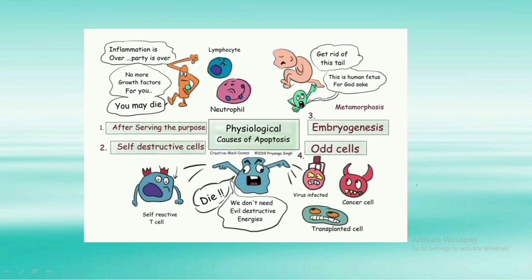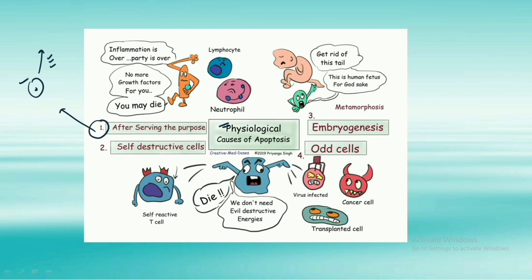Let's talk about the physiological causes of apoptosis. The first is after a cell has served its purpose — once a cell has undergone all of its functions, the body decides it should die off. The next physiological cause is that some cells in our body are self-destructive, which is also one cause for apoptosis to happen. The third cause is metamorphosis and embryogenesis — when an embryo is developing in the mother's womb.